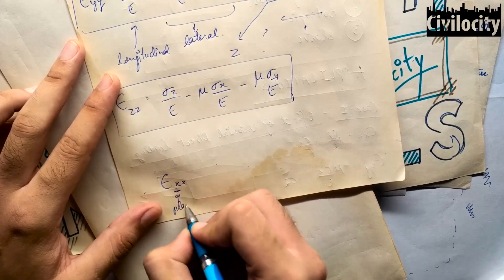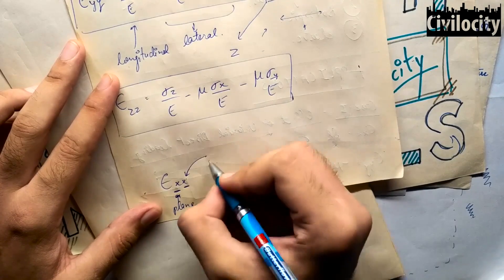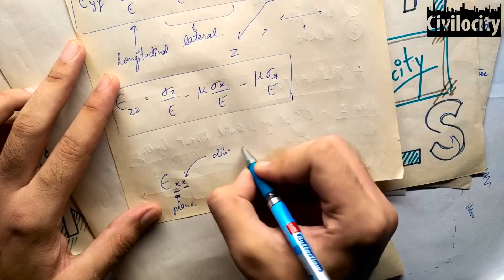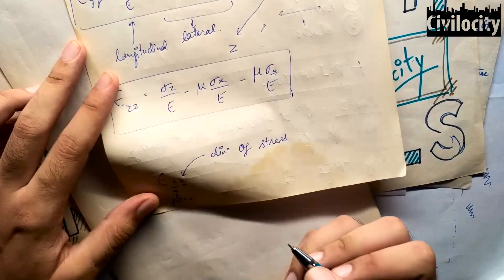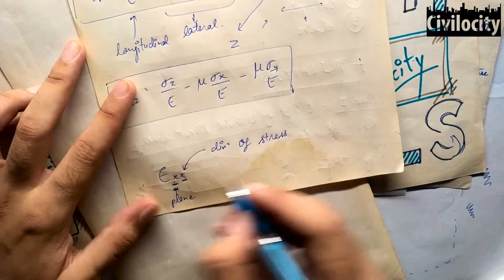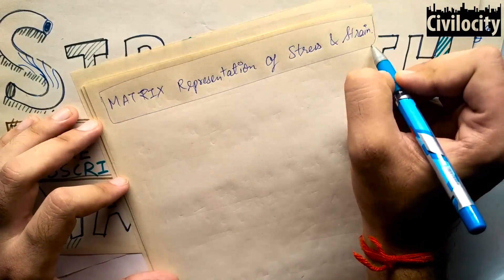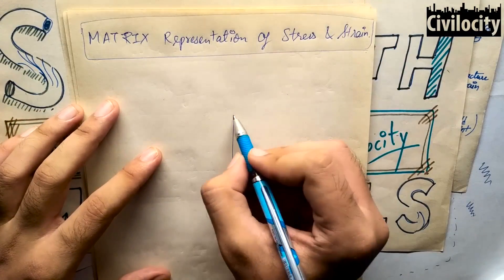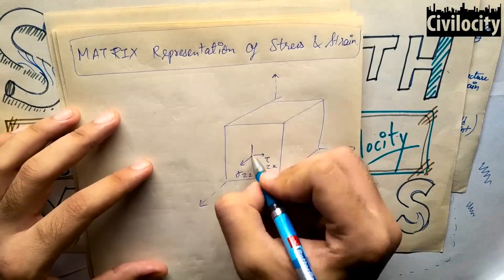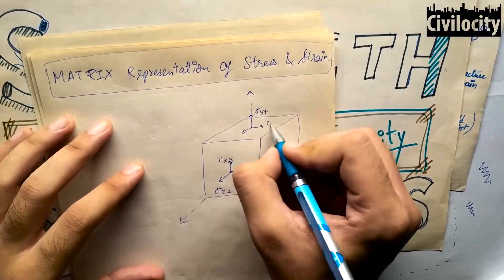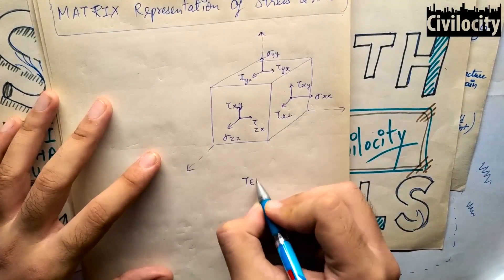These were the two cases of applications of Hooke's Law. In the strain notation, the first letter denotes the plane and the second denotes the direction of stress. Now let's talk about the matrix representation of stress and strain. When we talk about a stress matrix, we have a term called stress tensor. A tensor is a geometric object which describes the linear relations between geometric vectors, scalars, and other tensors.